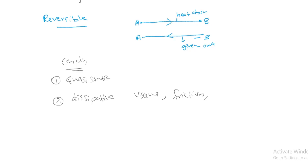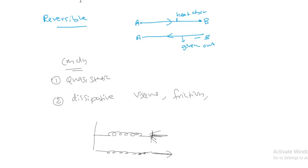An example of a reversible process is a spring. If a force is applied and the spring is compressed very gradually, work is done on the spring. When the compression force is removed, the spring expands and exactly the same amount of work is done by the spring. If the spring is perfectly elastic, this process is reversible.